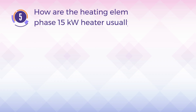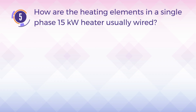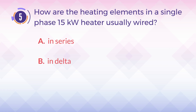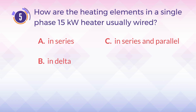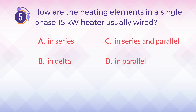Number 5. How are the heating elements in a single phase 15-kilowatt heater usually wired? A. In series. B. In delta. C. In series and parallel. D. In parallel.